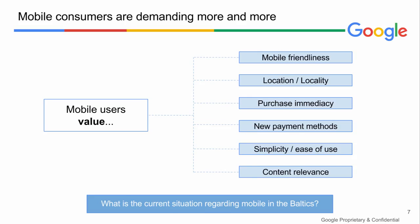While mobile has become such a big part of consumers' lives, users have become much more demanding. In order to deliver as good a customer experience as possible, mobile content providers need to pay attention to what mobile users value: easy navigation and user-friendliness, the possibility to reach content in different locations and on the go, the ability to pay over the phone, and most importantly, the relevance of the content received. Doing all of this can highly improve the chances of converting customers or increasing their loyalty.